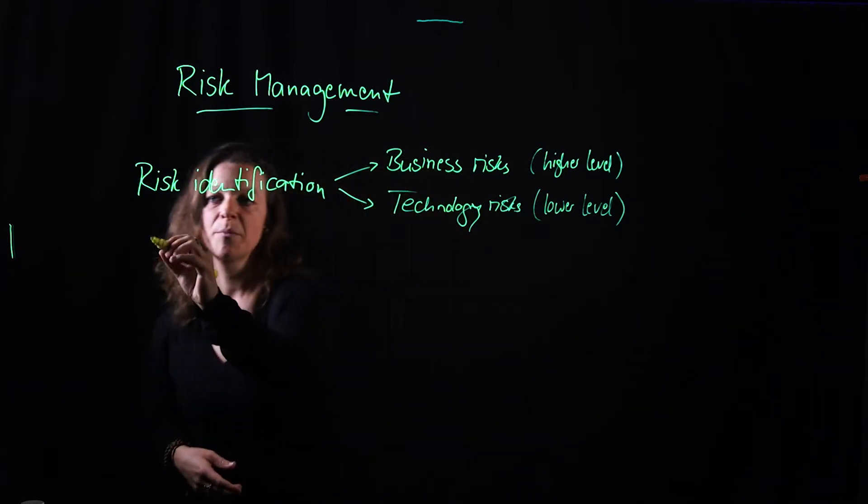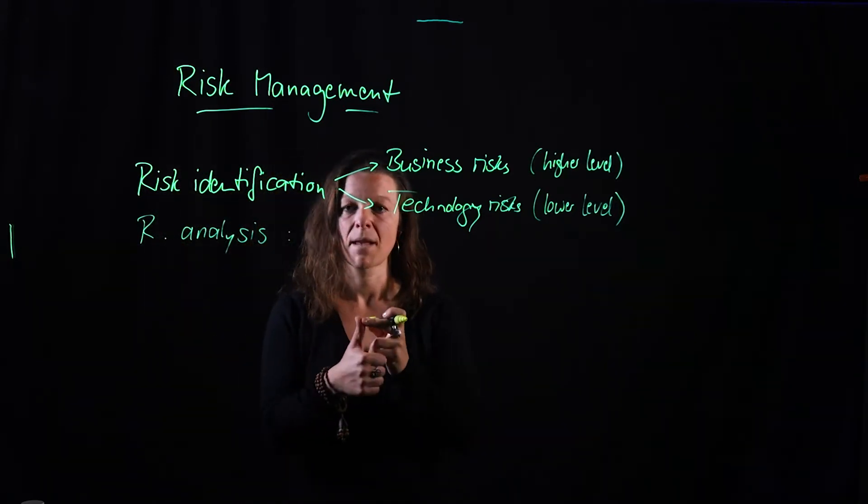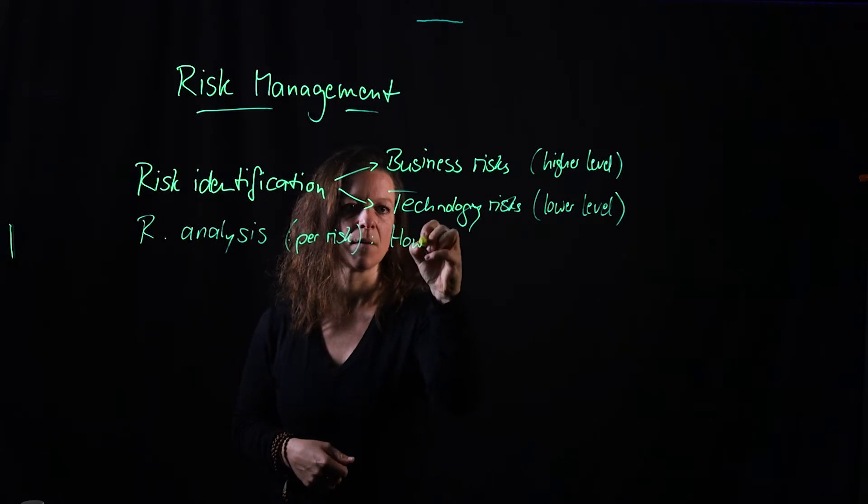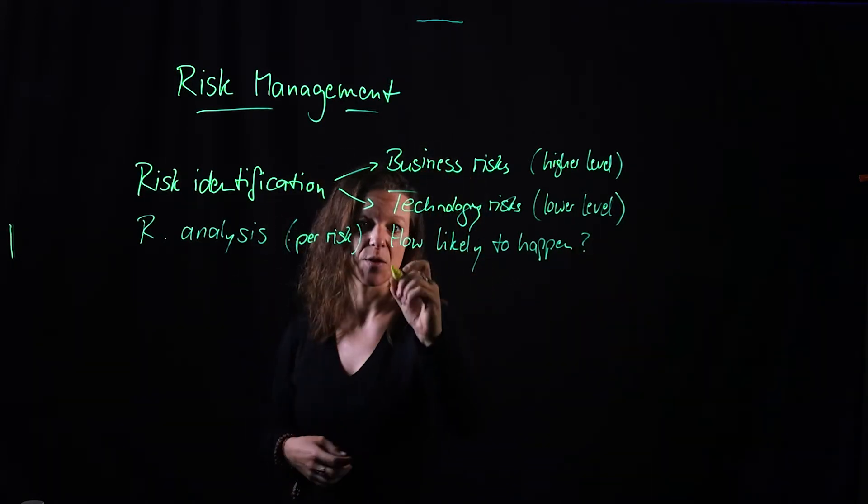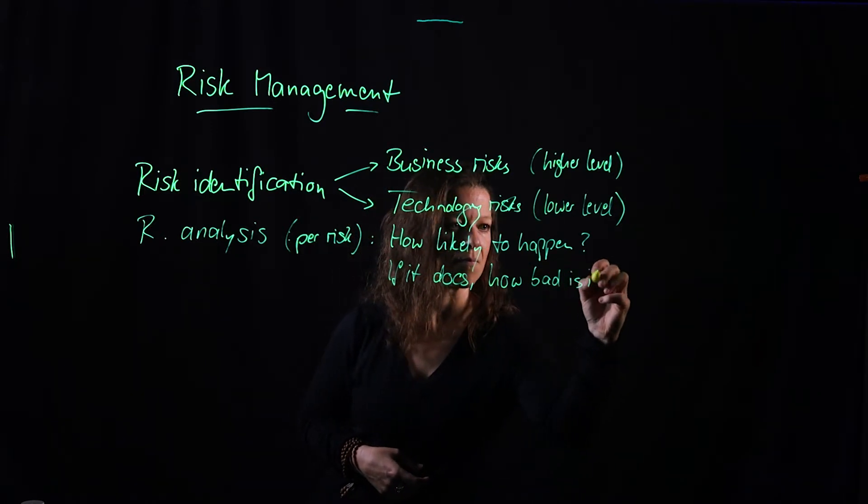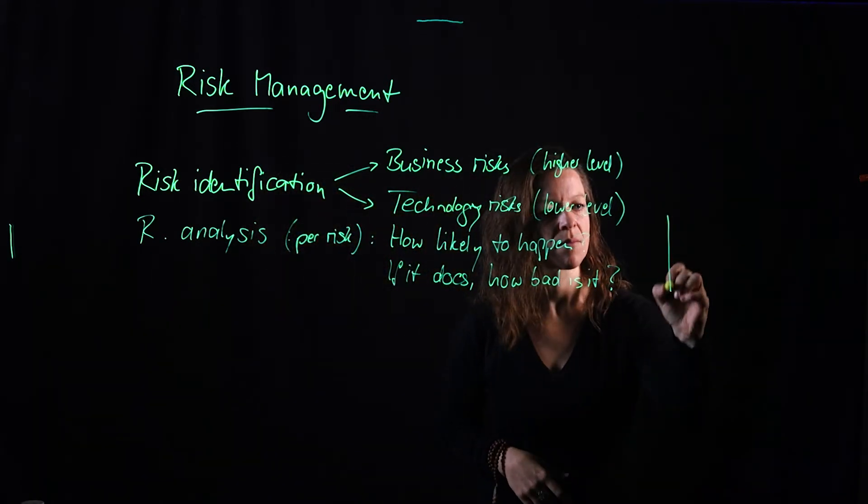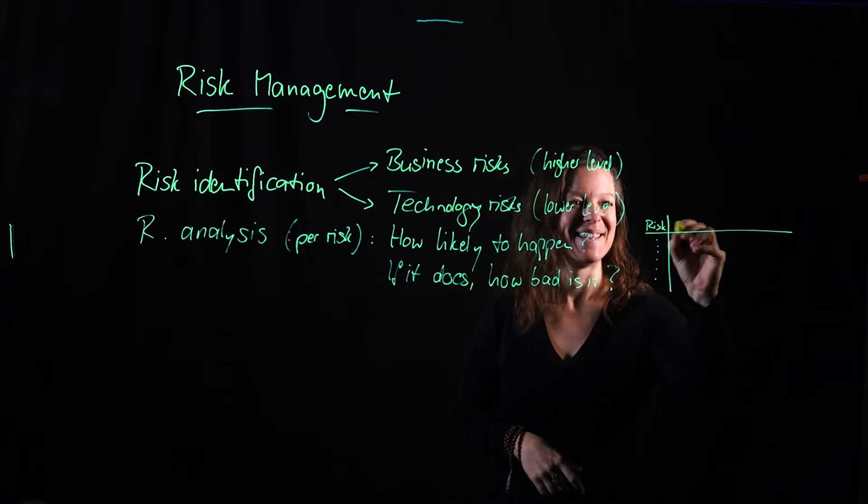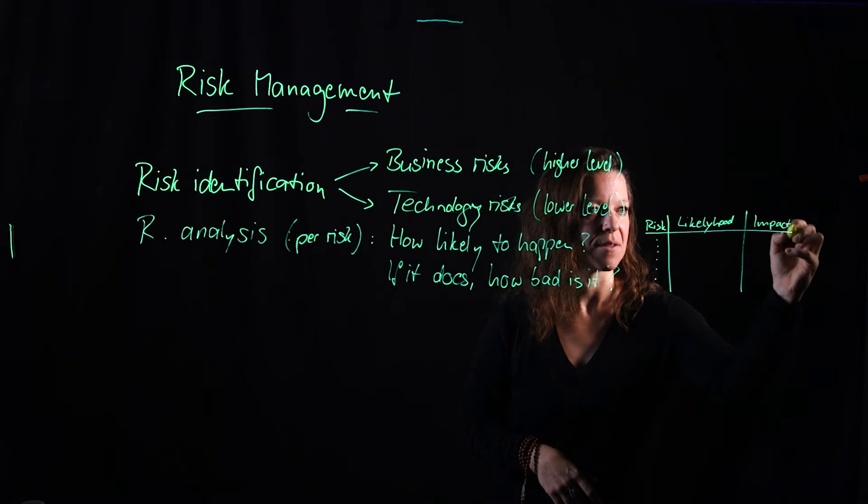For each of those risks you want to perform an analysis that says how likely is this going to occur for risk? And if it does happen, how bad is it going to be? Now based on this analysis you can then come up with a table. So here you're going to have your risk list, your list of risks, and then here you have your likelihood. And here you have the how bad is it in terms of impact.